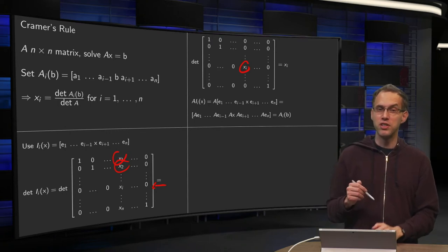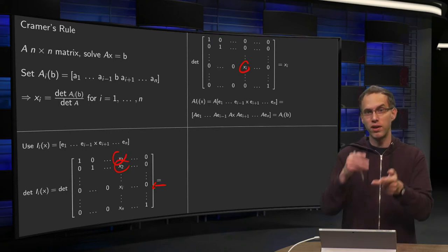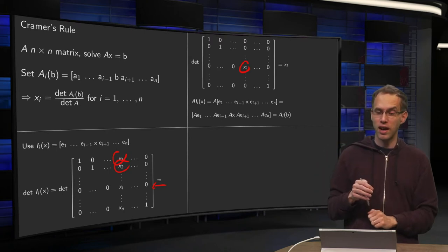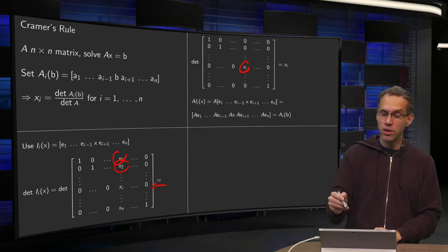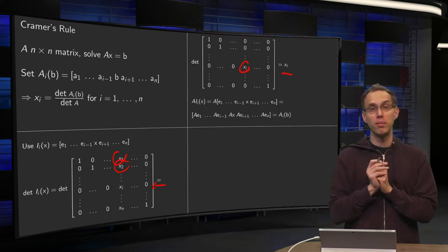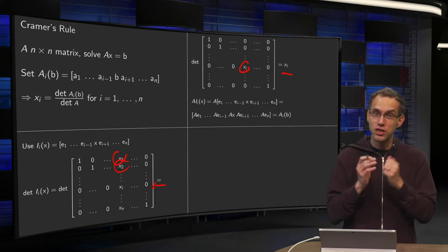And now, computing the determinant is easy. It's just 1 times 1 times 1, product of the numbers on the diagonal, times x_i times 1 times 1 times 1, or just x_i. So the determinant of our matrix I_i(x) is just x_i.